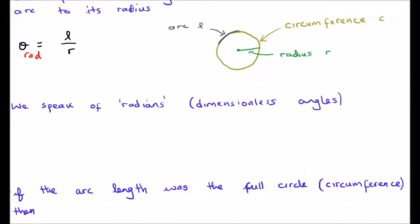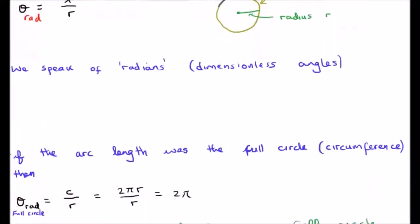Now, what would happen if we looked at the whole circle? So let's say the arc length became the circumference of the circle. Or we looked at what is the total, what is the sum of all of the angles in a circle? So if we plugged in C instead of L, we find that there are C over R radians in a full circle.